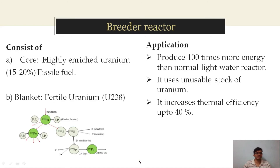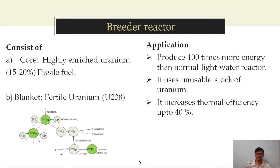Normally, this breeder reactor consists of two components: the core and the blanket. The core is made of highly enriched uranium, around 50 to 20% fissile fuel — either uranium or plutonium-239. This core element is covered with a blanket of fertile uranium, which gets converted into nuclear fuel. The primary application of the breeder reactor is to produce 100 times more energy than a normal light water reactor, use unusable stock of uranium, and increase thermal efficiency up to 40%. The breeder reactor requires fertile uranium-238 and fissile uranium-235 or plutonium-239.